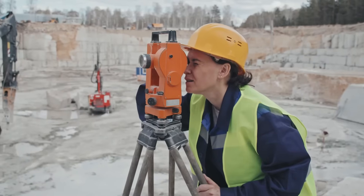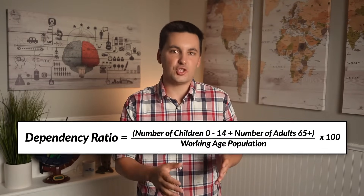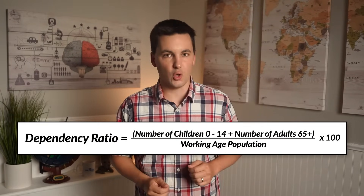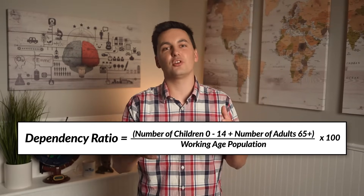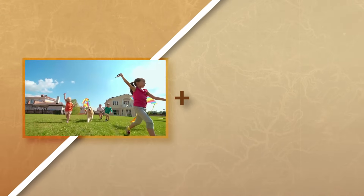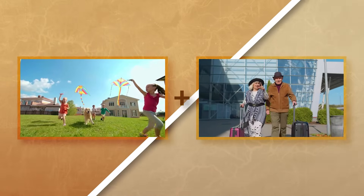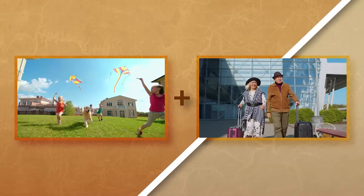Speaking of age cohorts, another important ratio we can use when looking at these pyramids is the dependency ratio, which gives us insight into how many people a society has to support. The higher this number, the greater the burden on the working population. To find it, you take the number of children between 0 and 14 years old, add the number of people 65 years or older, divide by the working-age population, and multiply by 100. These groups are added together because they are either not yet in the workforce or have already retired.